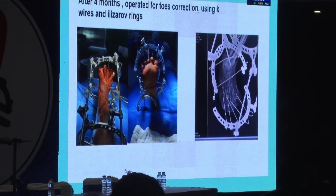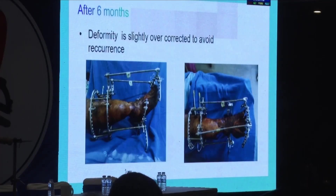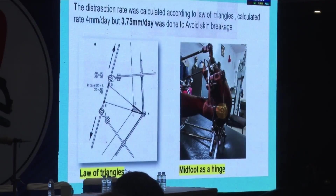The skin was so stony hard, so there was no question of soft tissue release. This is how the final correction occurred. I had to over-distract in order to achieve adequate correction. We have to stick to the basics of hinge placement — how much to distract and where to place the hinge, and how to calculate the amount of distraction required.